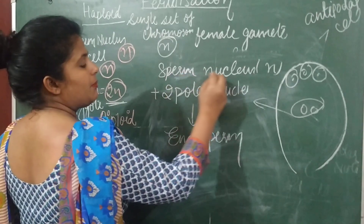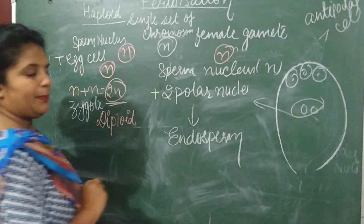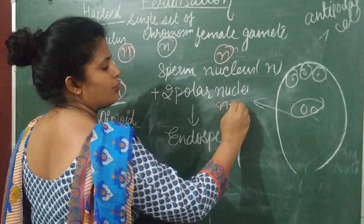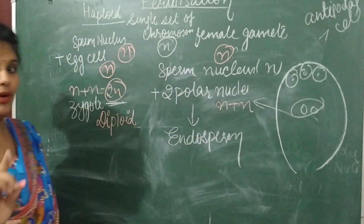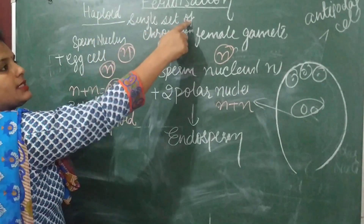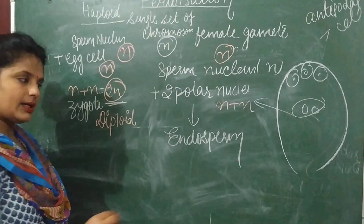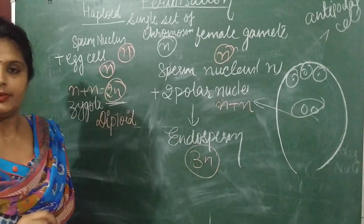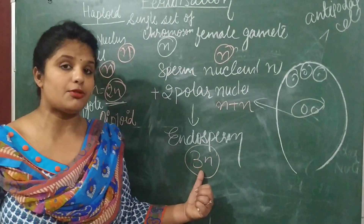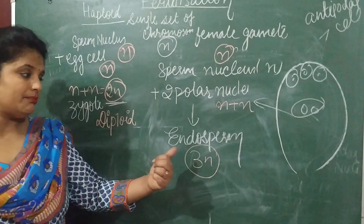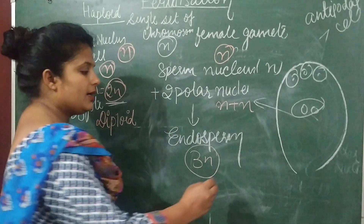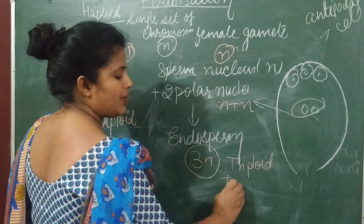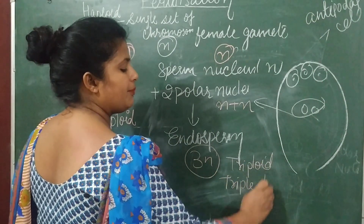The sperm nucleus contains n chromosomes — that is the haploid condition. Each polar nucleus also contains n chromosomes. When they combine — n (sperm) + n + n (two polar nuclei) — they form 3n. The endosperm therefore has three sets of chromosomes, meaning it is triploid. This fusion is called triple fusion — this is a very important question.